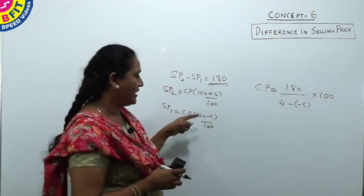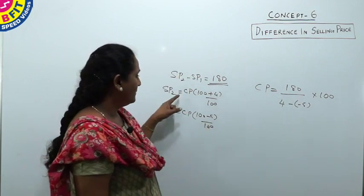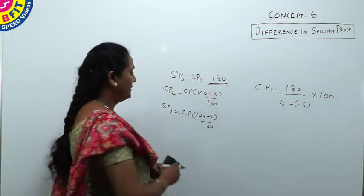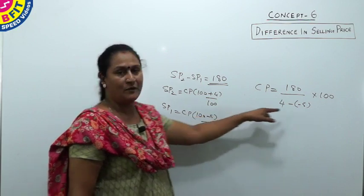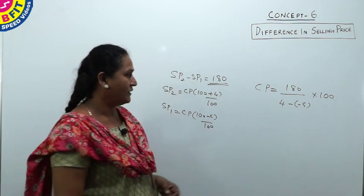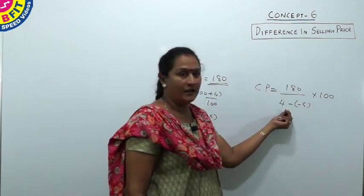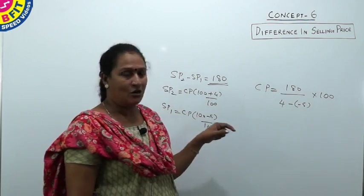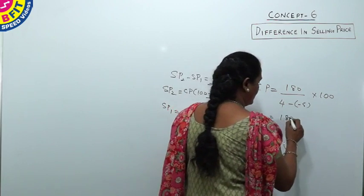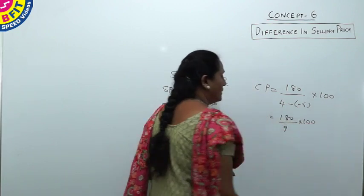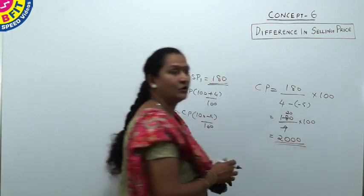After substituting SP2 and SP1 and simplifying, the working gives: 180 × 100 divided by (4 + 5), because minus of minus becomes plus. So instead of working through all the substitution steps, cost price = difference in selling price / difference in profit percent × 100. The cost price is 2000.